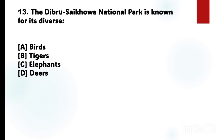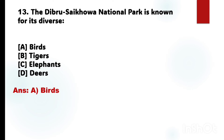Next question number 13: The Dibru Saikhowa National Park is known for its diversity. The correct answer is Option A: Birds.